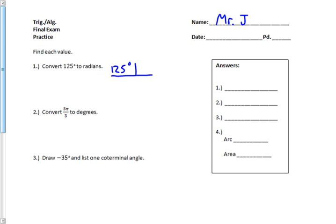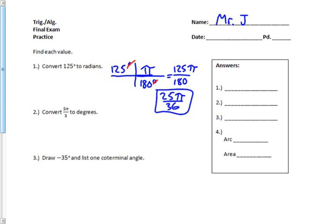I start off with 125 degrees. Using factor label, remember the conversion is that there are 180 degrees for every pi radians. I just make sure my units line up so the degrees cancel out. What I end up with is 125π over 180, and then I just reduce that fraction — 125 over 180 reduces to 25π over 36. And that's it.